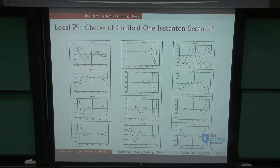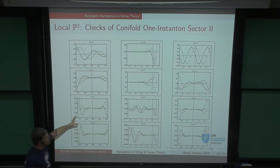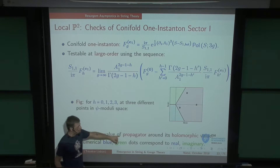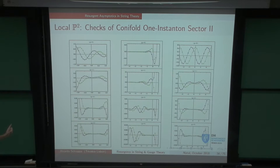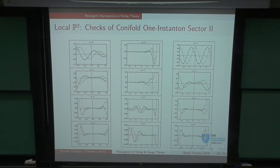These are the tests shown in the plots: three columns for three different points in moduli space, and rows for loop orders 0, 1, 2, 3 of the one-instanton. The x-axis varies the propagator S around its holomorphic value. In blue is the real part and in green the imaginary part — these are generically complex functions. Lines are what our equations predict; dots are what the numerics gives. The agreement is convincing.